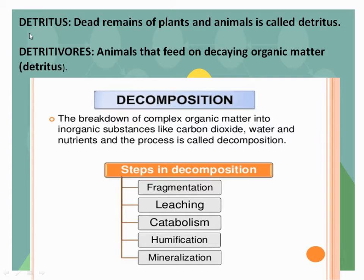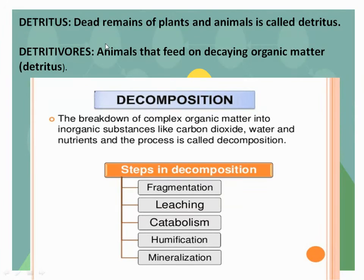Two important terms here: detritus and detrivores. Detritus is the dead remains of plants and animals. Detrivores are the animals that feed on decaying organic matter. So naturally, the breakdown of complex organic matter — that organic matter is detritus — and the breakdown takes place by detrivores.